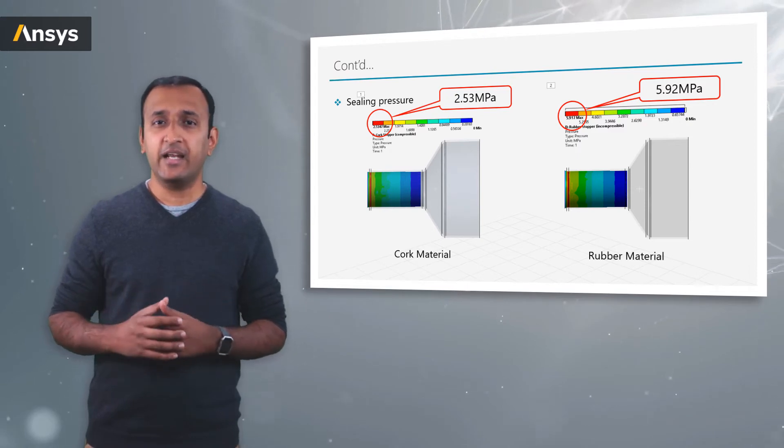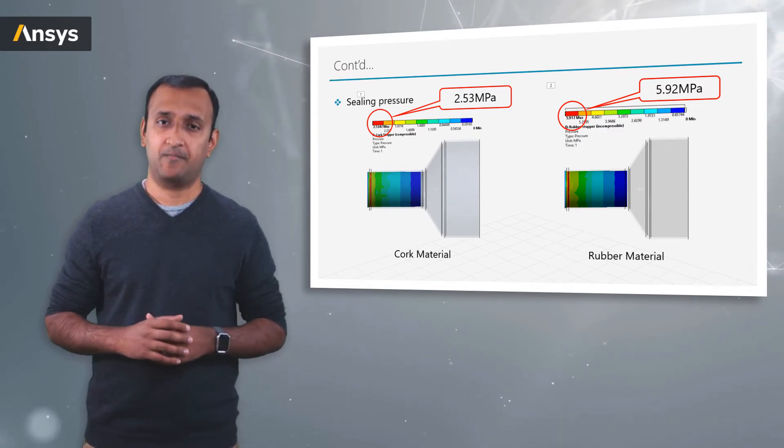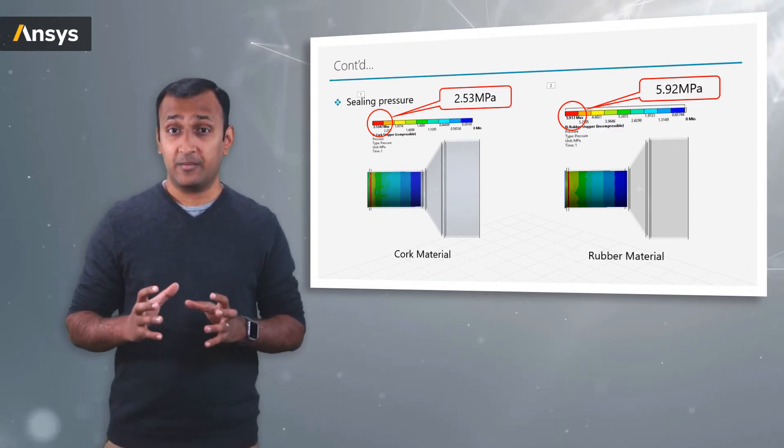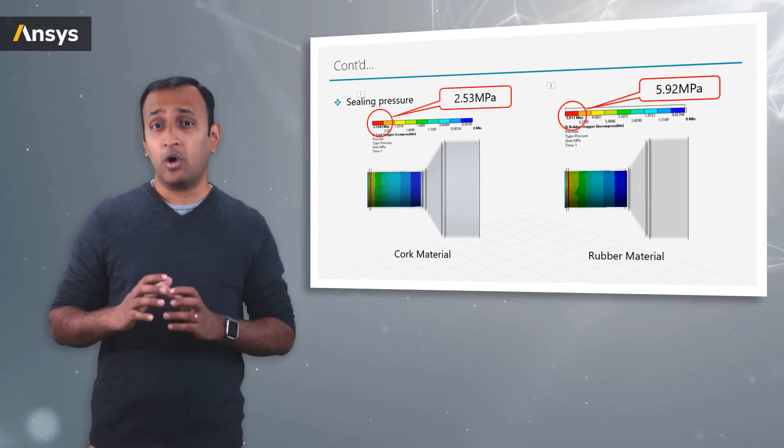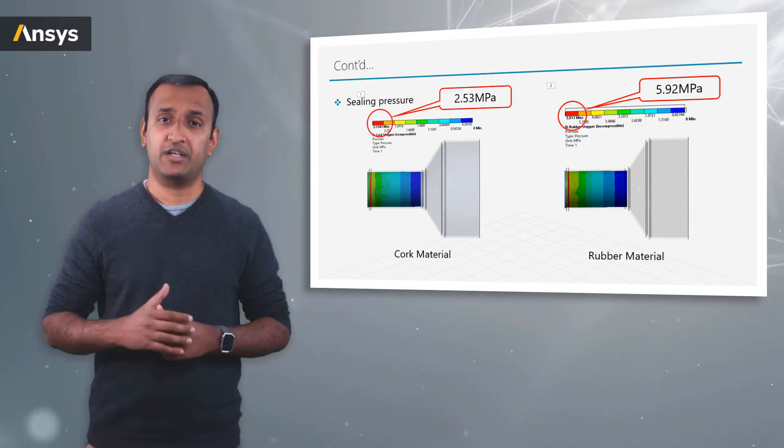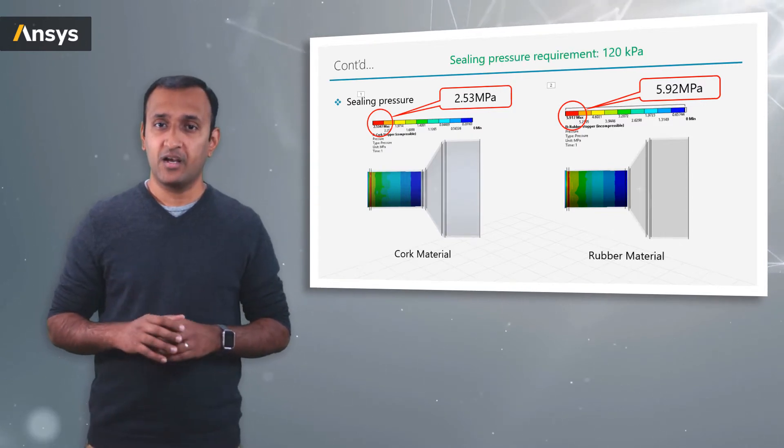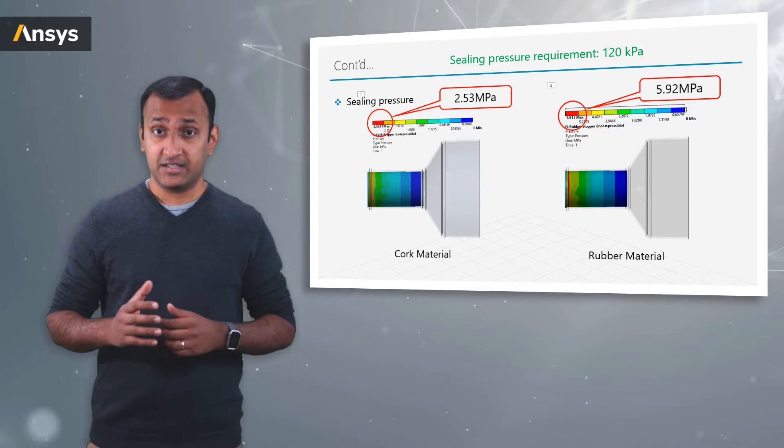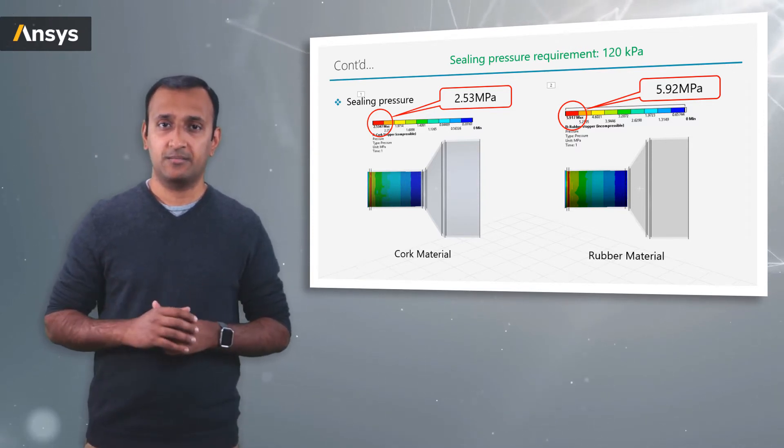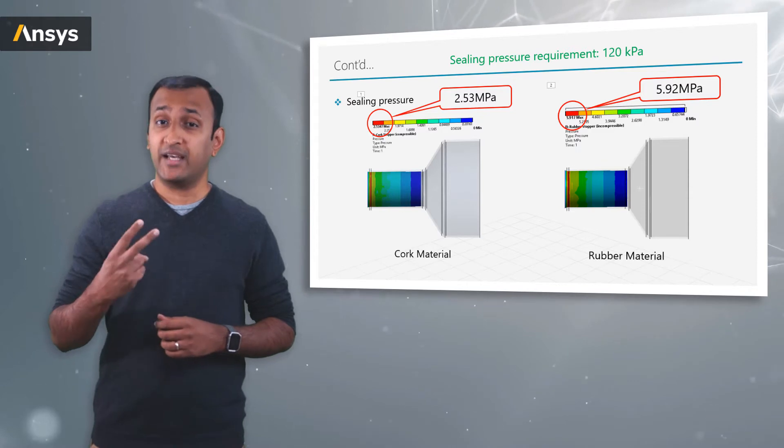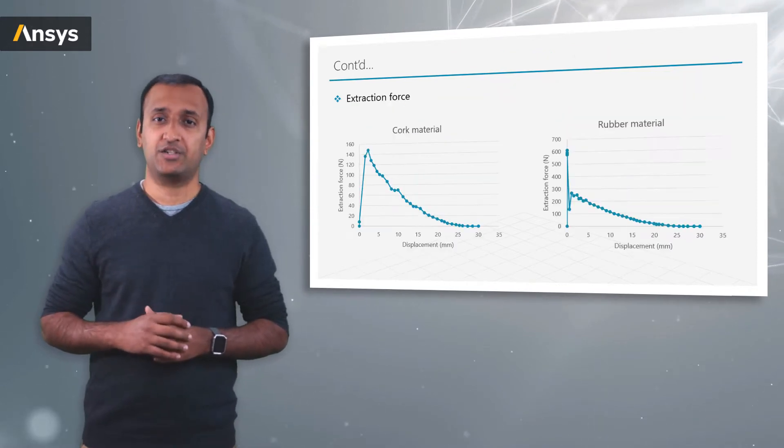So it isn't creating any noticeable hydrostatic stress, whereas the rubber which is nearly incompressible is creating a hydrostatic pressure which is almost comparable to its deviatoric stress. So in either case, the sealing pressure requirement is met for both the materials. So we move on to the second quantity, which is the extraction force.